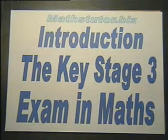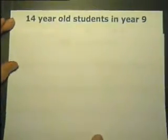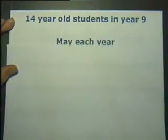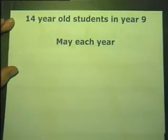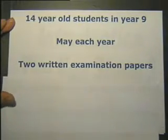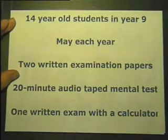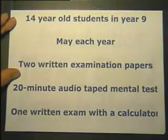This is a short introduction to the Key Stage 3 examinations in mathematics. The Key Stage 3 exams are for 14 year old students, usually in year 9, and the exams are held early in May every year. In mathematics there are two written exam papers and one 20 minute audio mental test. One of the two written exam papers allows a calculator.